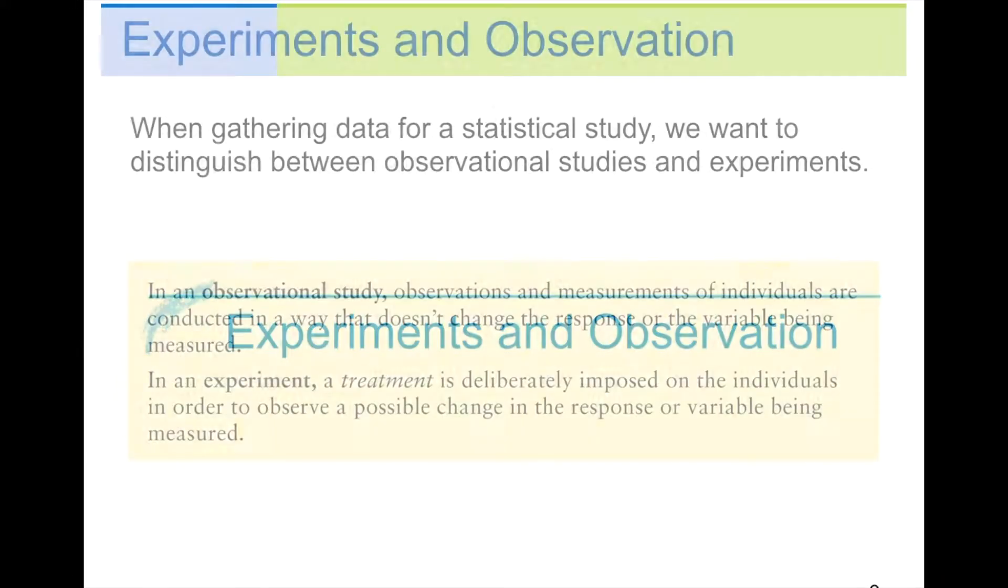Experiments and observation. When gathering data for a statistical study, we want to distinguish between observational studies and experiments. In an observational study, observations and measurements of individuals are conducted in a way that doesn't change the response or the variable being measured. So, this is like giving a survey or actually watching how something happens. In an experiment, a treatment is deliberately imposed on the individuals in order to observe a possible change in their response or variable being measured. So, in this case, you're actually changing the environment some way. Oftentimes, this is used in giving drugs. If you're not changing anything, you're just observing, it's an observational study. If you change something, it's an experiment.